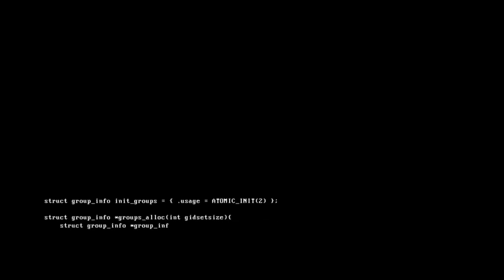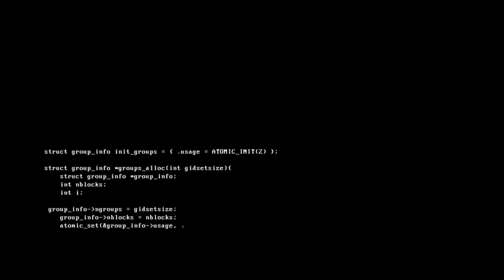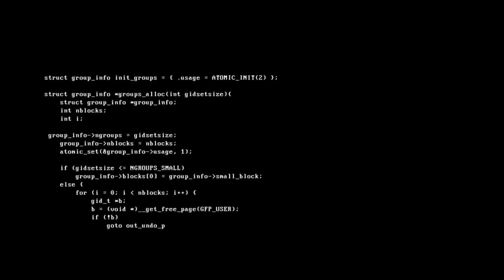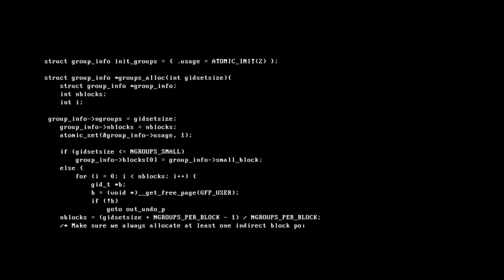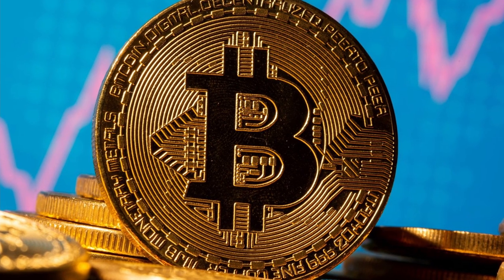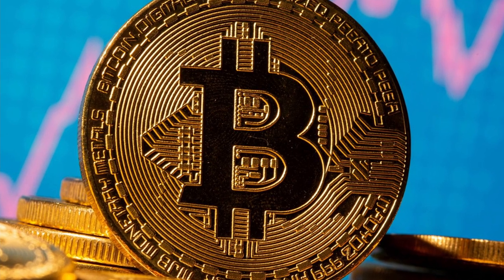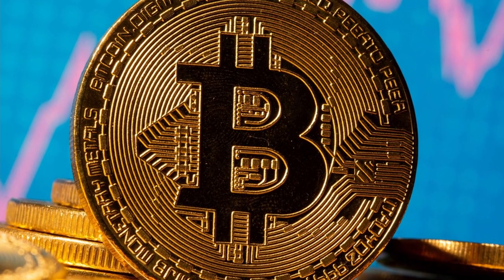After the official launch of the first version of Bitcoin software, Nakamoto collaborated with software developers and coders online over the next couple of years to improve the software. In 2010, the value of a single Bitcoin was roughly 8 cents, and by the end of the year, the total value of the cryptocurrency topped $1 million.